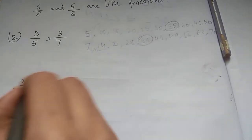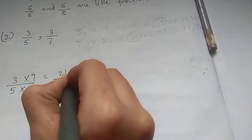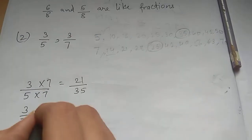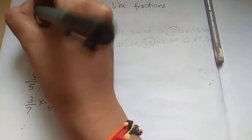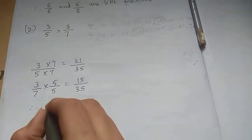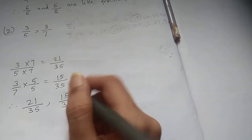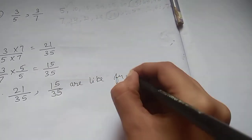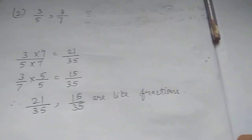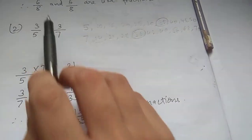So 5 multiply by what number? 7. And 7 multiply by what number? 5. So 3 by 5 we have to multiply by 7, and 3 by 7 we have to multiply by 5. Therefore 21 upon 35, 15 upon 35 are like fractions.